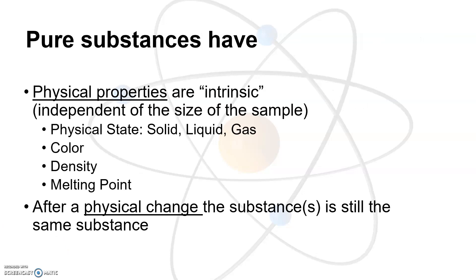So pure substances, these are elements or compounds by themselves. They have physical properties that do not depend on the size of the sample. So for instance, sulfur, elemental sulfur, has a color that's yellow. It wouldn't matter if I had a small amount or a large amount. It has the same color. And other physical properties are density, melting point, and even the physical state, meaning solid, liquid, or gas at room temperature.